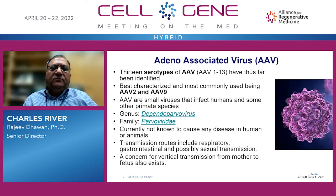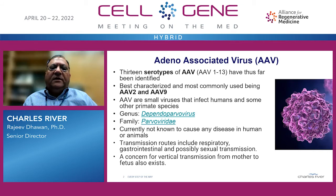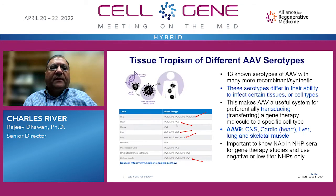Transmission routes include respiratory, gastrointestinal, possibly sexual transmission, and also vertical transmission from mother to fetus. This makes it very difficult to stop transmission if a few animals are infected in a colony.